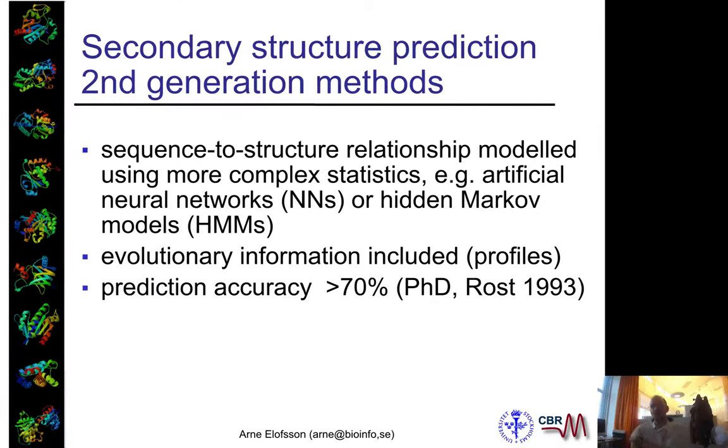The second generation of secondary structure prediction methods was introduced by Rost in the early 90s with the PHD method. The key idea was to use multiple sequence alignments. This was really what made the breakthrough, and it was the first time the prediction actually reached over 70%.